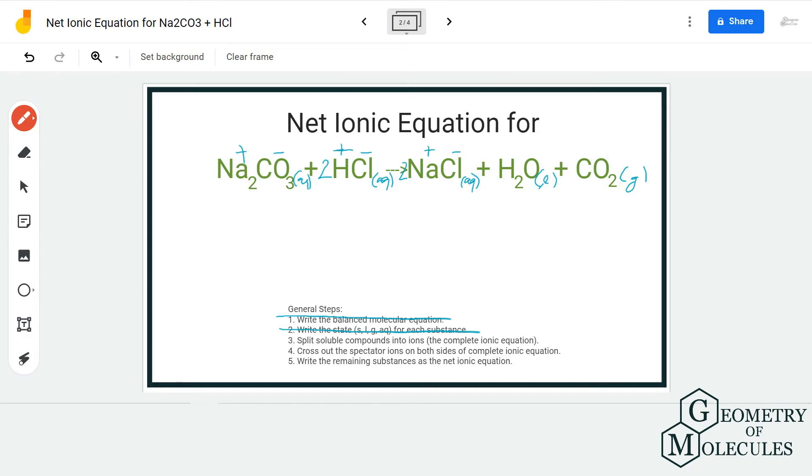Now you can start writing the ions. We have 2Na⁺ because there are two atoms of Na, then we have CO₃²⁻. For HCl we have 2H⁺ and 2Cl⁻. On the product side we have 2Na⁺, 2Cl⁻, H₂O will be written as it is, and CO₂ will be written as it is.